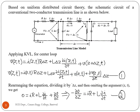Based on uniform distributed circuit theory, the schematic circuit of a two-wire line or two-conductor transmission line is as shown below. As mentioned before, a two-wire line is divided into small segments. Each segment has length delta z. A small length of the line can be represented by an equivalent symmetrical T-network with constant parameters R, L, G, and C per unit length, as shown in the figure.